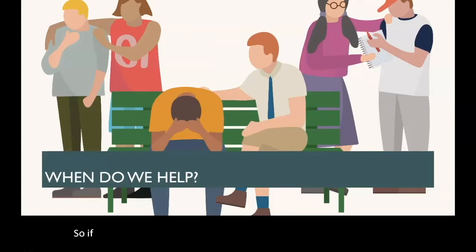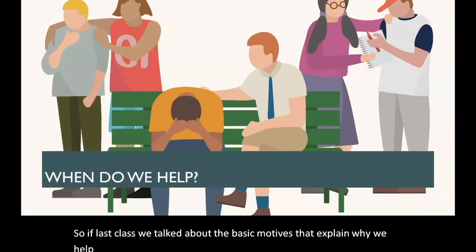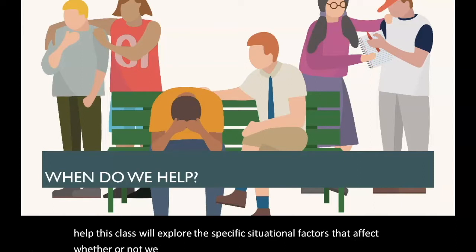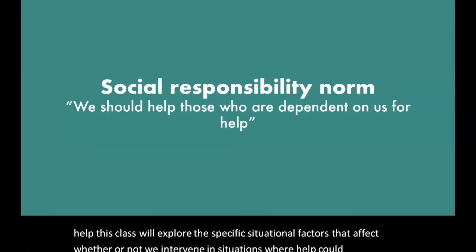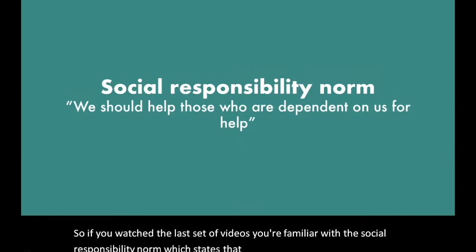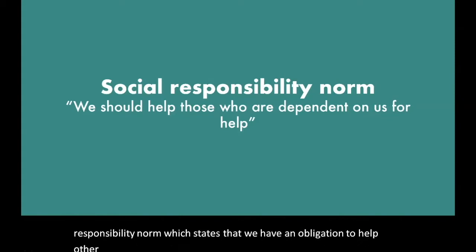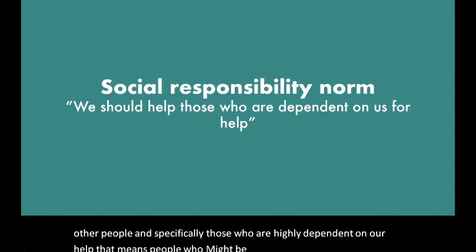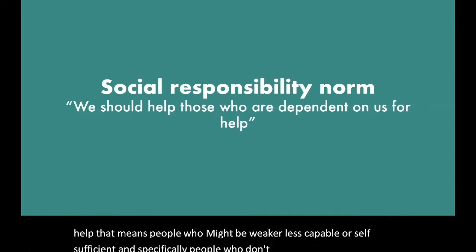So if last class we talked about the basic motives that explain why we help, this class will explore the specific situational factors that affect whether or not we intervene in situations where our help could be useful. If you watched the last set of videos, you're familiar with the social responsibility norm, which states that we have an obligation to help other people — specifically those who are highly dependent on our help, people who might be weaker, less capable or self-sufficient, and specifically people who don't have other sources of aid.